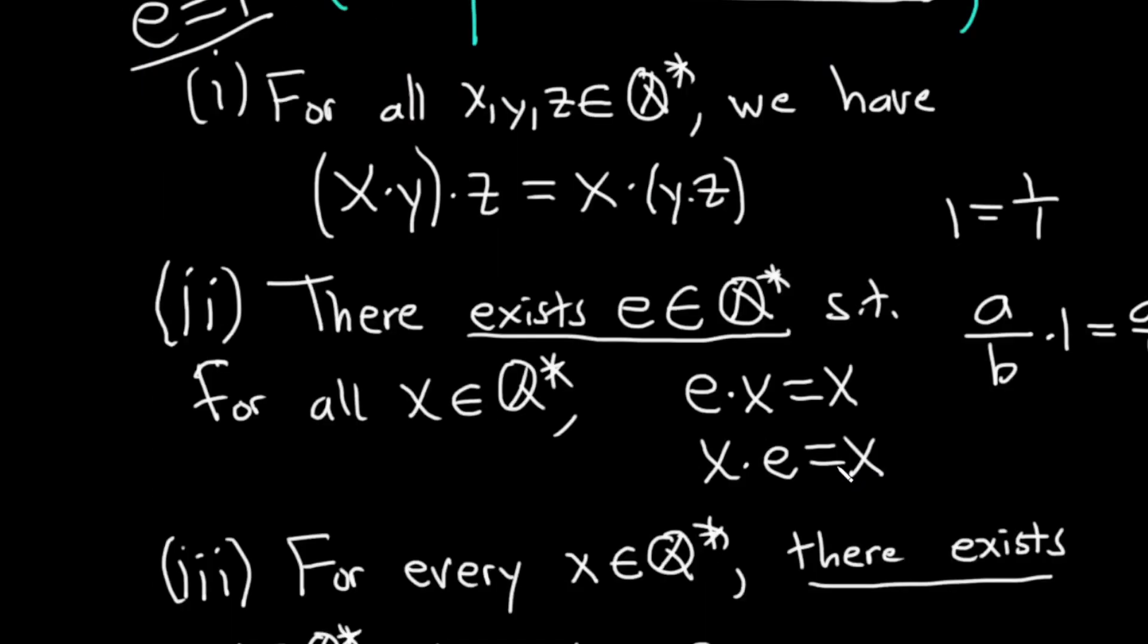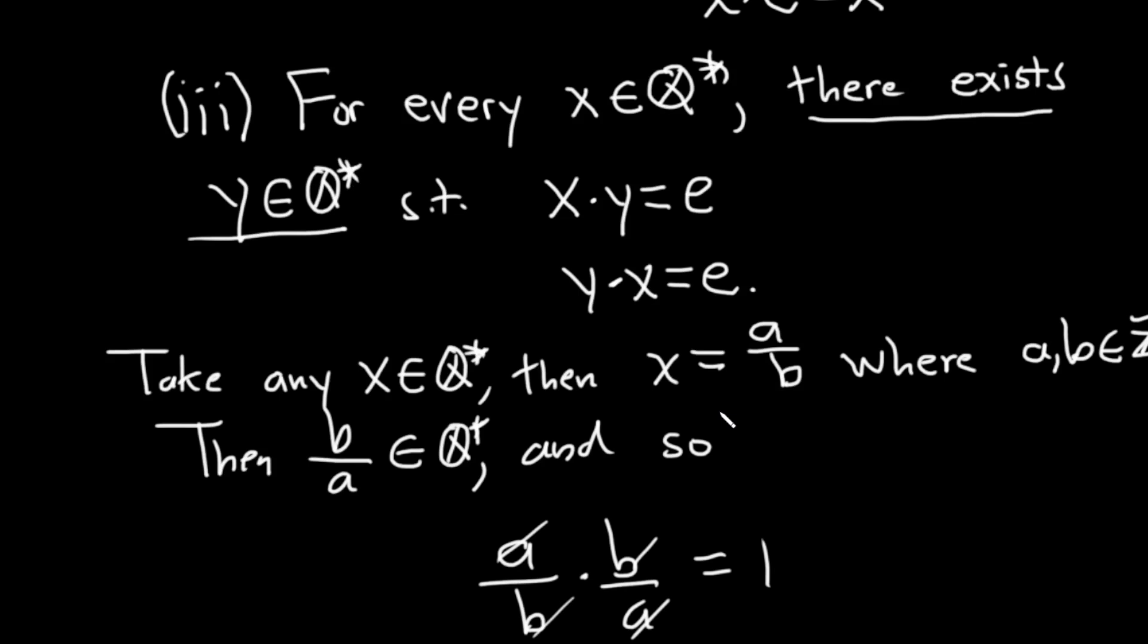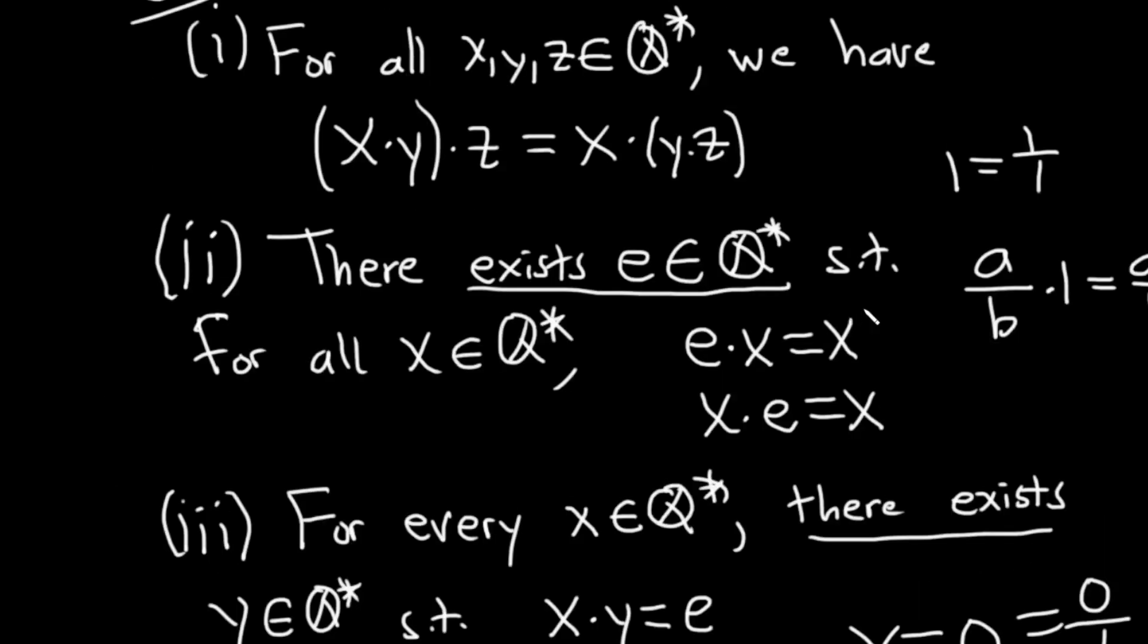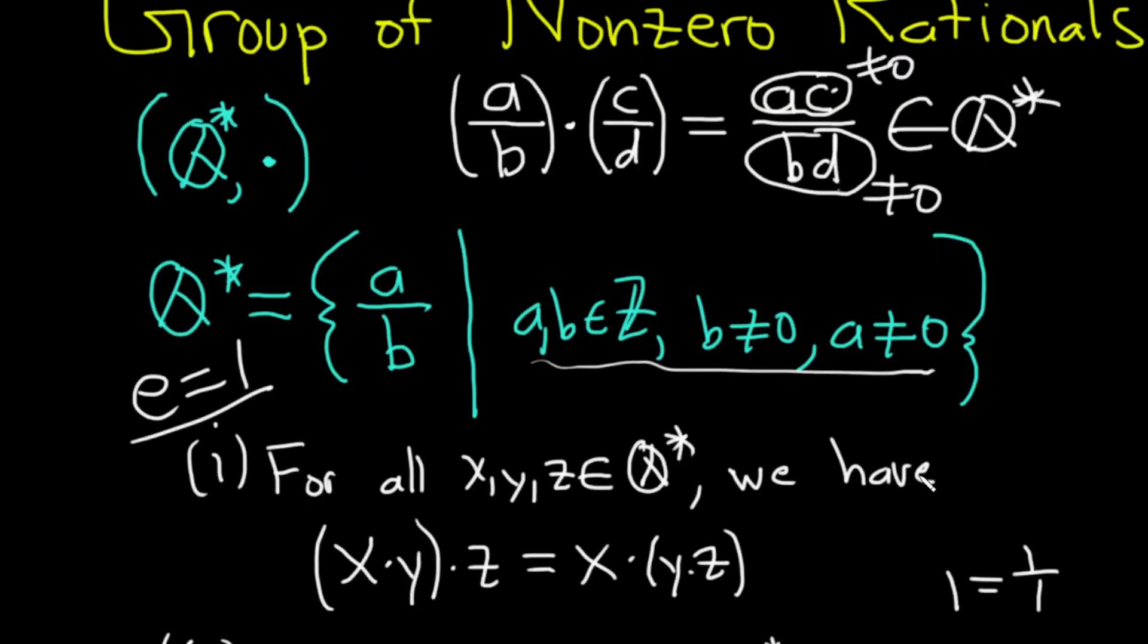And you can see how it would be a problem if we allowed zero because if you get X equals zero, which is zero over one, well, what's the inverse? One over zero? You can't divide by zero. So it won't work. So that's why we had to throw away zero for this to be a group.